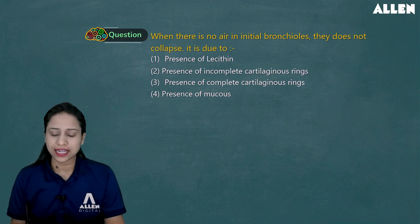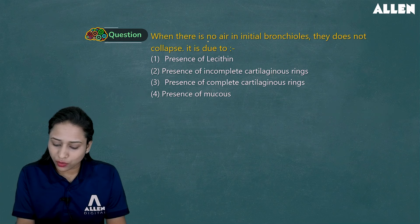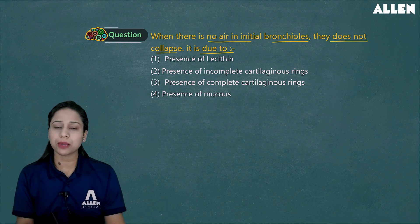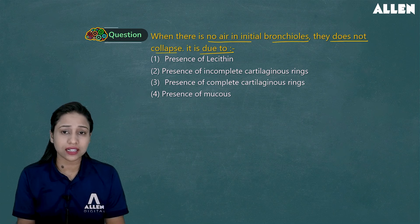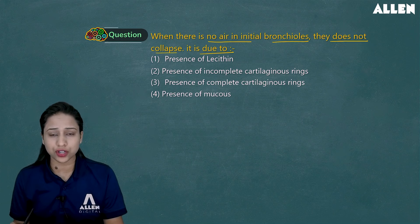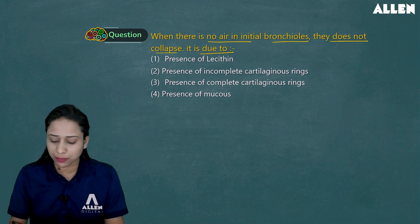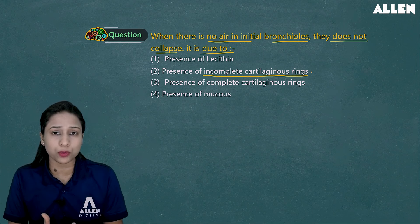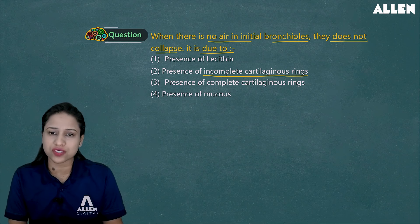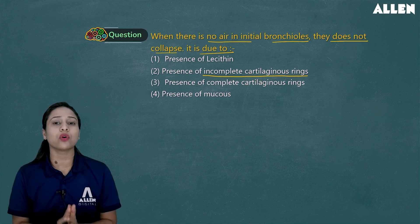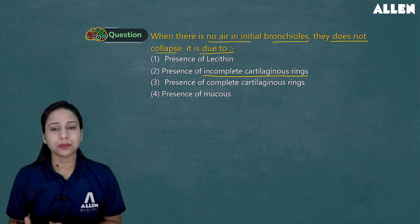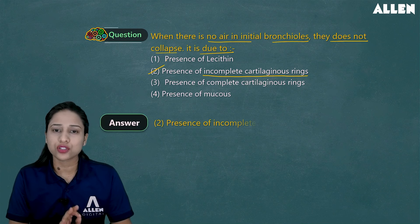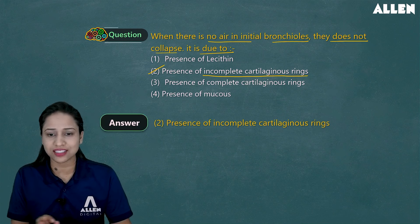The next question: When there is no air in the initial bronchioles, they do not collapse. This is due to — recall that the trachea, primary bronchi, secondary bronchi, tertiary bronchi, and initial bronchioles are covered by incomplete cartilaginous rings, which provide support. That is why they do not collapse even when air is less. The correct answer for this question is option number 2: presence of incomplete cartilaginous rings.